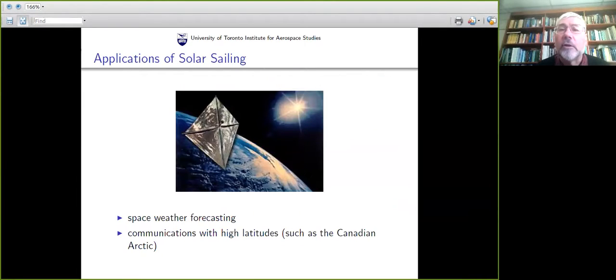What good are solar sails? Why would we want to take all the trouble to make a large, shiny object like this and put it in space? There are two main applications. One is for forecasting what we call space weather. The other is for communicating with high latitudes, such as the Canadian Arctic. It's very difficult for us to see the Canadian Arctic from normal spacecraft, but a solar sail is ideal for communicating with the polar regions of the Earth.